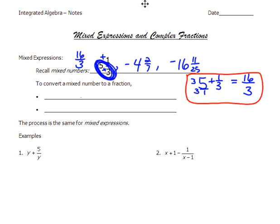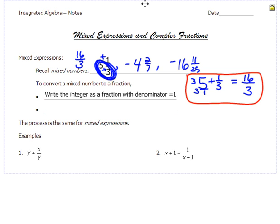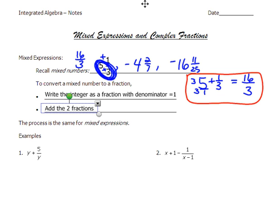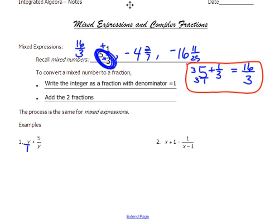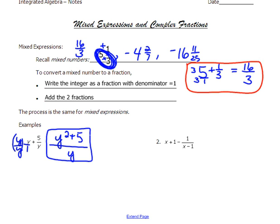To convert an algebraic mixed expression, you write the integer or variable component as a fraction with a denominator of one, then add the two fractions by getting common denominators. For example, I'm going to write y over one and add those two fractions. The common denominator is just y, so I'll multiply by y over y, and I get y-squared plus five, all over y.